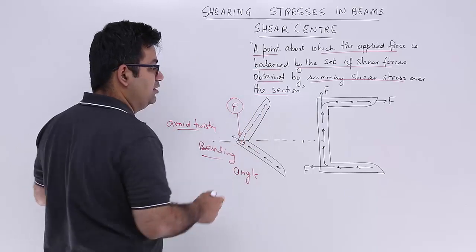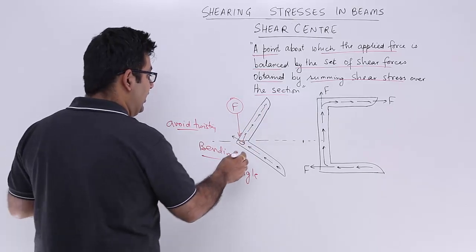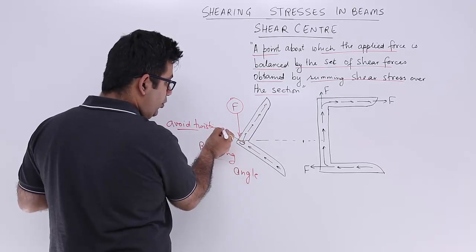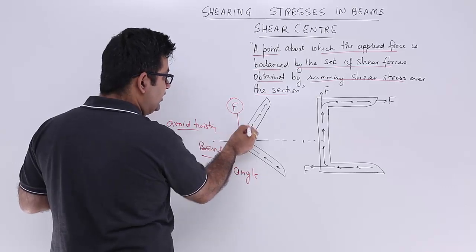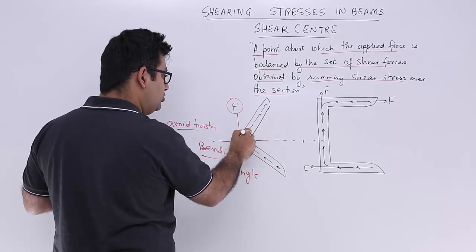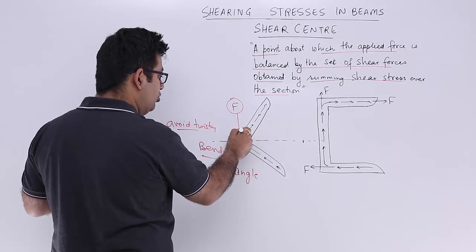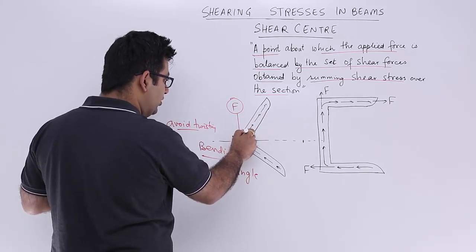This is one direction, this is the other direction. The resultant of these two will be in this direction. To balance out this resultant, I have to apply shear load in this direction only.